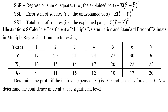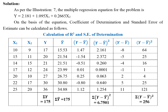In F-test: SSR = regression sum of squares (explained part), SSE = error sum of squares (unexplained part), SST = total sum of squares. Illustration 8: Calculate the coefficient of multiple determination and standard error of estimate from illustration 7. Determine the profit if indirect expenses x1 = 100 and sales force x2 = 90, and determine the confidence interval at 5% significance level. The multiple regression equation from illustration 7 is: ŷ = 2.181 + 1.095x1 + 0.2665x2.